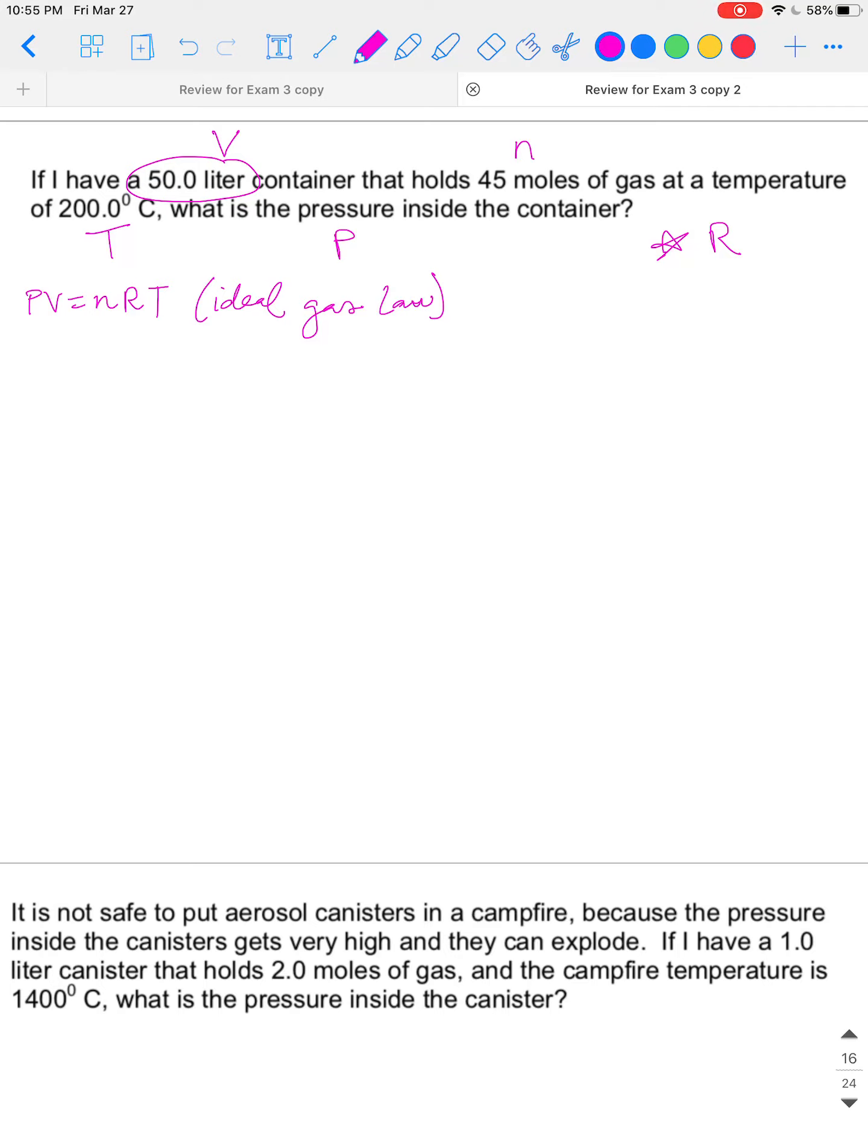So this is an ideal gas law problem. The question says, what is pressure? So I'm going to rearrange this equation to solve for pressure. Divide both sides of the equation by volume, and volume cancels out on the left side. So pressure equals N, number of moles, times R, times T, divided by the volume. Now remember, before we just go plug these numbers in, we have to make sure the units match what is given on R. So let's write out what R equals. R equals 0.0821 liters times ATM, mole times Kelvin.